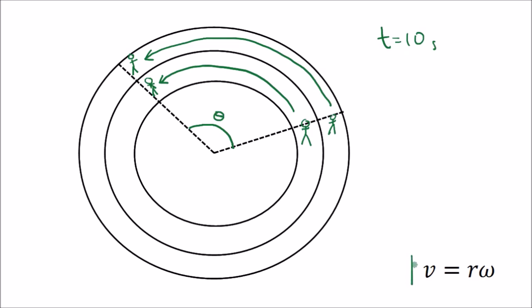Linear speed and angular speed are related by the equation v = rω, where r is the radius of the circle.